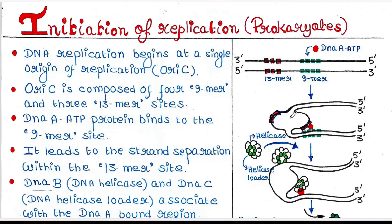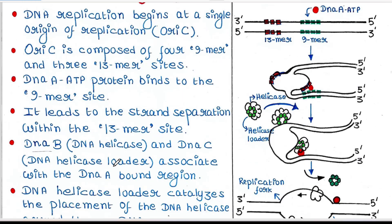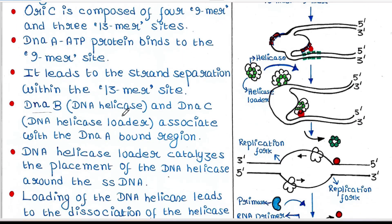DNA B and DNA C associate with the DNA A bound region. DNA B is DNA helicase, and DNA C is DNA helicase loader. They associate with the DNA A bound region.